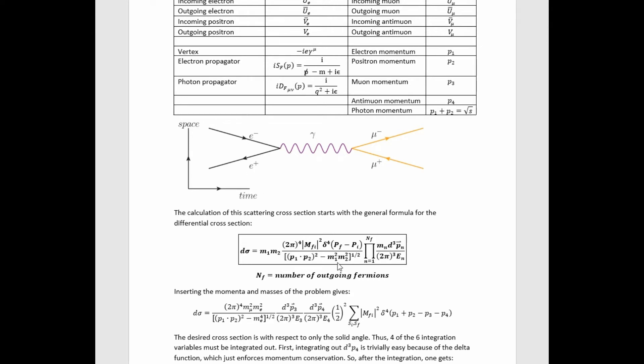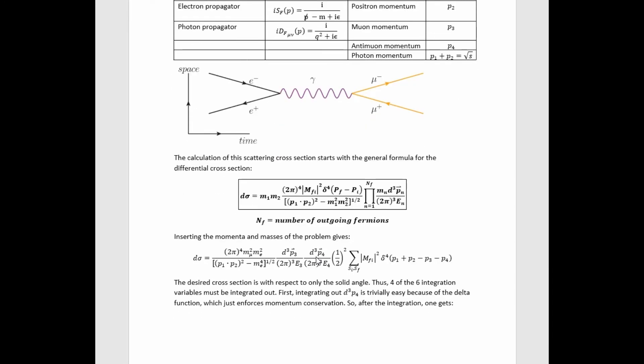We're calculating the differential scattering cross-section. For two incoming fermions and some number of outgoing fermions, the differential scattering cross-section general formula is right here. Now if we specialize that to the problem we're studying, we have this value for that cross-section.